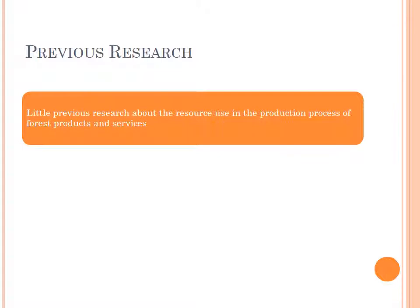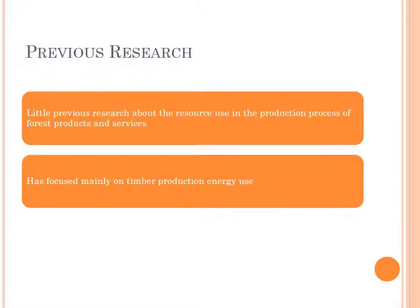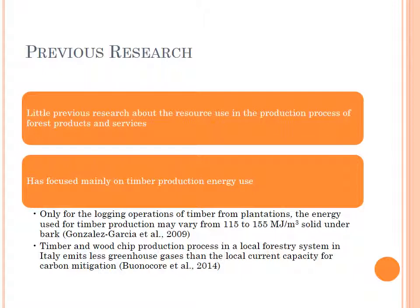Previous research has understood the need to estimate energy use in the production process of the forest sector, but little has been done and it has focused mainly on timber production energy use. For example, Gonzalez and Garcia estimated that energy used for log operations from plantations may vary from 115 to 155 megajoules per cubic meter solid under bark. While Buolocore and co-authors estimated that timber and wood chip production in a local forestry system in Italy emits less greenhouse gases than the local carbon capacity for carbon mitigation.